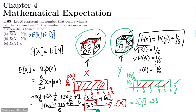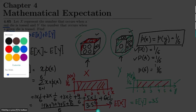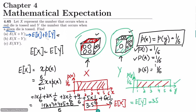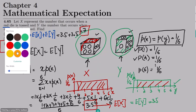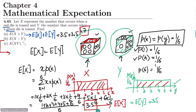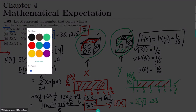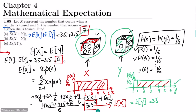We can also verify that since both dice are the same, the probability distribution on all numbers remains the same. For part a: E of X plus Y equals E of X plus E of Y, which is 3.5 plus 3.5, equal to 7. For part b: E of X minus Y equals E of X minus E of Y, which is 3.5 minus 3.5, equal to 0.